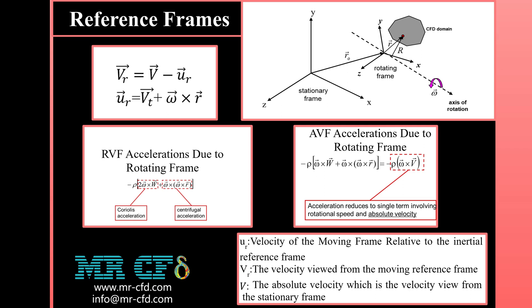In the equation, omega is the angular velocity vector of the rotating frame, and r is the position vector in the rotating frame. Note that Fluent cannot accurately model a time-varying angular velocity using the relative velocity formulation (RVF). The Coriolis acceleration, centrifugal acceleration, and RVF acceleration formula arise due to the rotating frame, while acceleration reduces to a single term involving rotational speed and absolute velocity in the absolute velocity formulation (AVF).